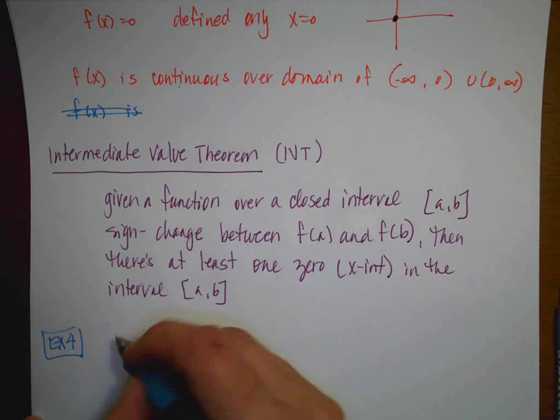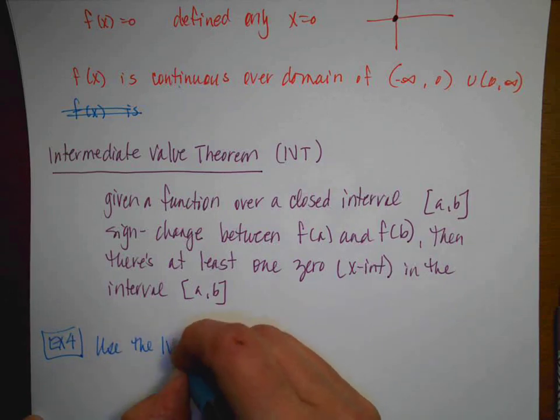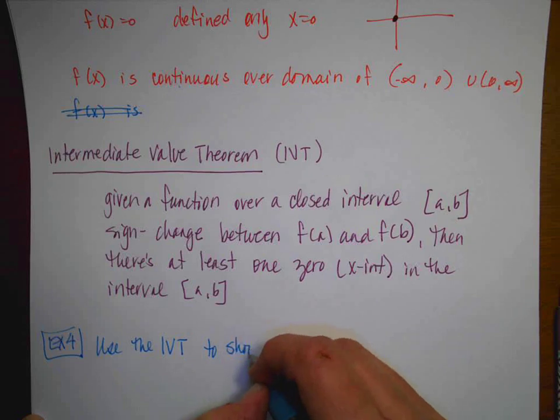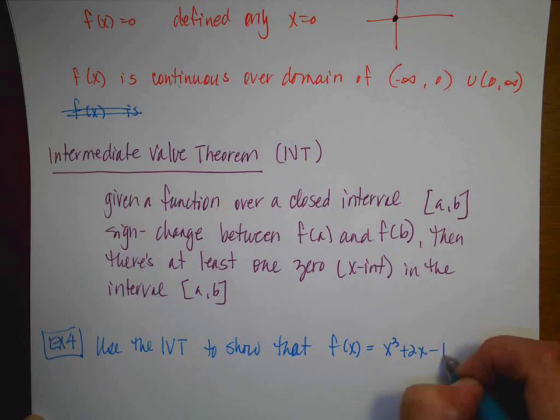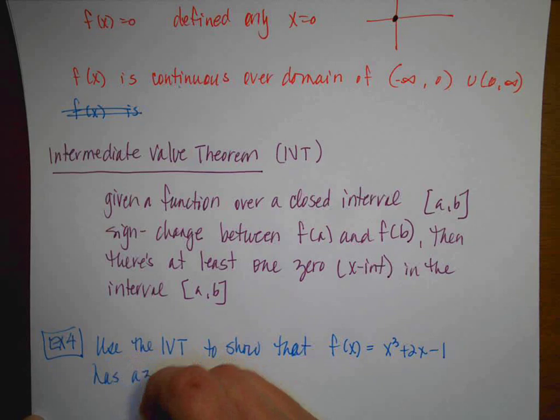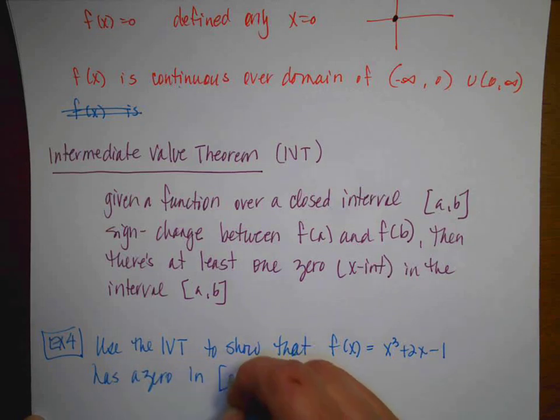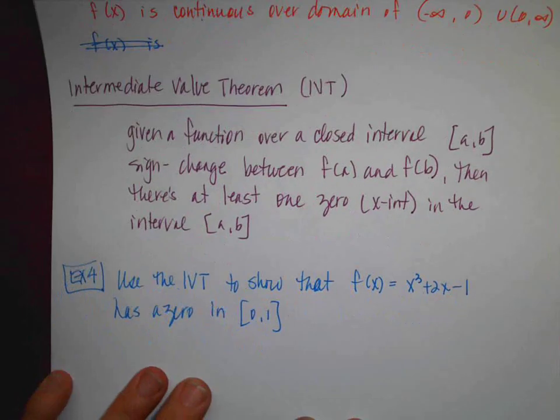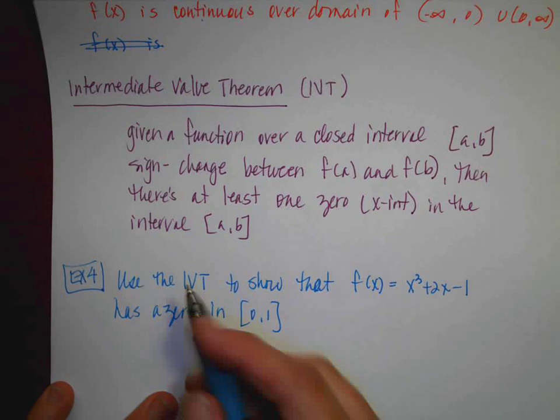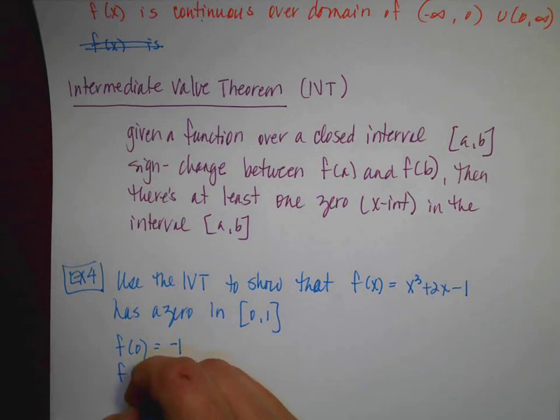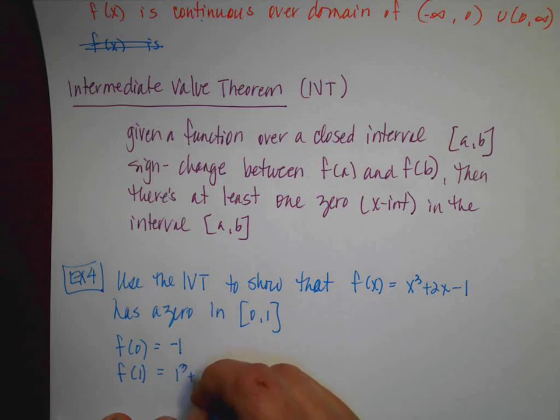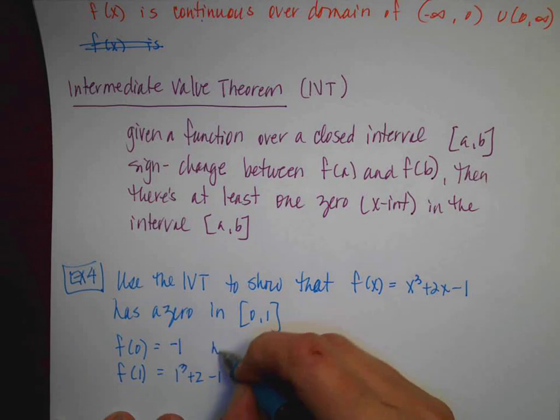And it's easier, I think, if I illustrate this. So we'll do that with an example. Let's do example four. And I'm just going to illustrate the intermediate value theorem. So it says, use the intermediate value theorem to show that f(x) = x³ + 2x - 1 has a 0 in the interval from 0 to 1. Now, I could get out my handy-dandy grapher, and I could just graph this, and I could find the 0. But that's not what they want you to show. So I'm going to evaluate the function at 0, and I'm going to get a -1. And if I evaluate the function at 1, 1³ + 2 - 1 is going to be 2.